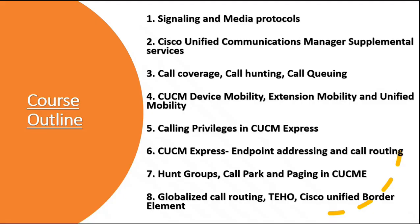This is the course outline — the main topics we are going to cover. These include signaling and media protocols, Cisco Unified Communication Manager supplemental services (such as call park and call pickup), call coverage, call hunting, and call queuing. There is also CUCM device mobility, extension mobility, and unified mobility. Calling privilege in CUCM Express, CUCM Express endpoint addressing and call routing, hunt group, call park, and paging in Call Manager Express. Then there is globalized call routing and border element.